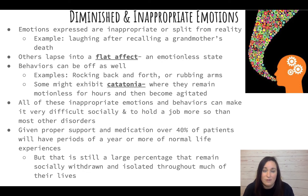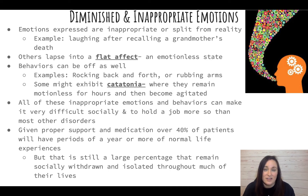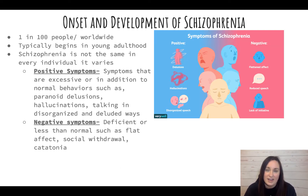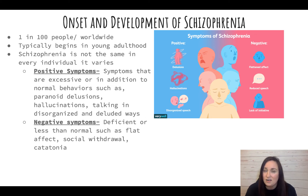Given proper support and medication, over 40% of patients can have periods of a year or more where they experience normal life. However, many people with schizophrenia do not receive adequate healthcare or family support, leaving them socially isolated — especially those of lower socioeconomic status. Schizophrenia is not a culture-bound disorder; it happens across the world, typically begins in young adulthood, and onset in men is on average four years younger than in women.